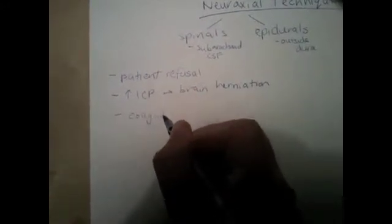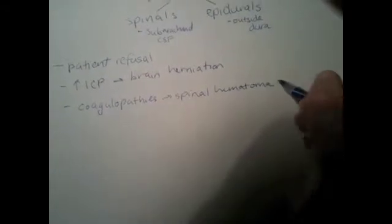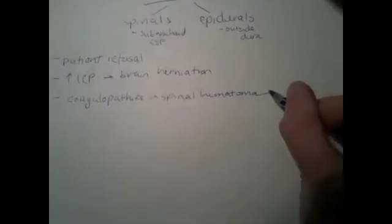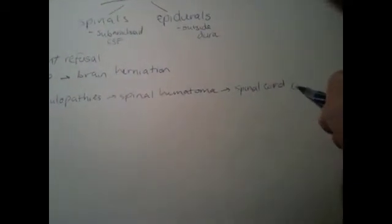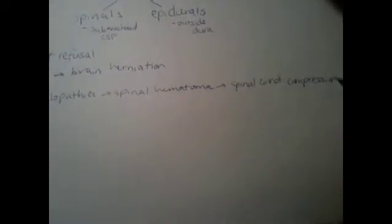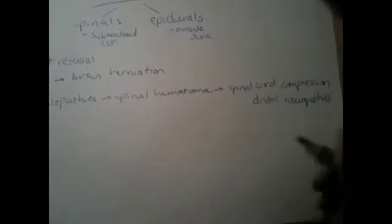Then we can talk about coagulopathies. These are contraindicated because if you were to cause some bleeding in and around the spinal cord, you can cause what's called a spinal hematoma, which, if there's difficulty clotting, can get very large and cause spinal cord compression and various distal neuropathies — which obviously we don't want. So that's a contraindication as well.